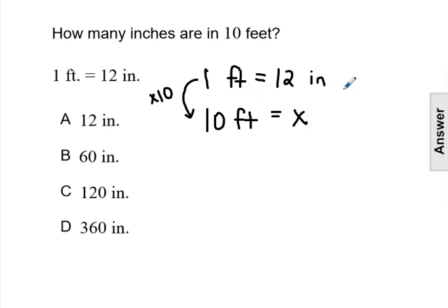So if we're multiplying our feet by 10, we're going to multiply our inches by a factor of 10 to find out that 10 feet would be 12 times 10, which would be 120 inches. That's answer choice C.